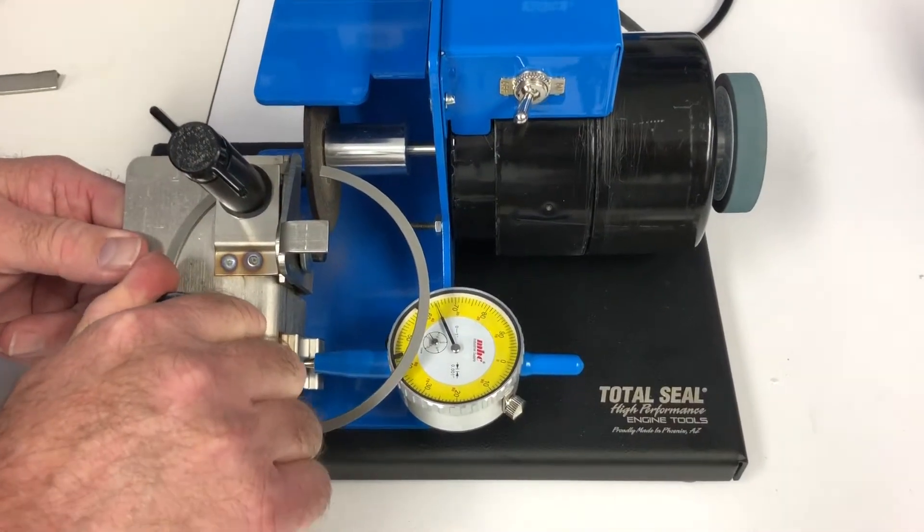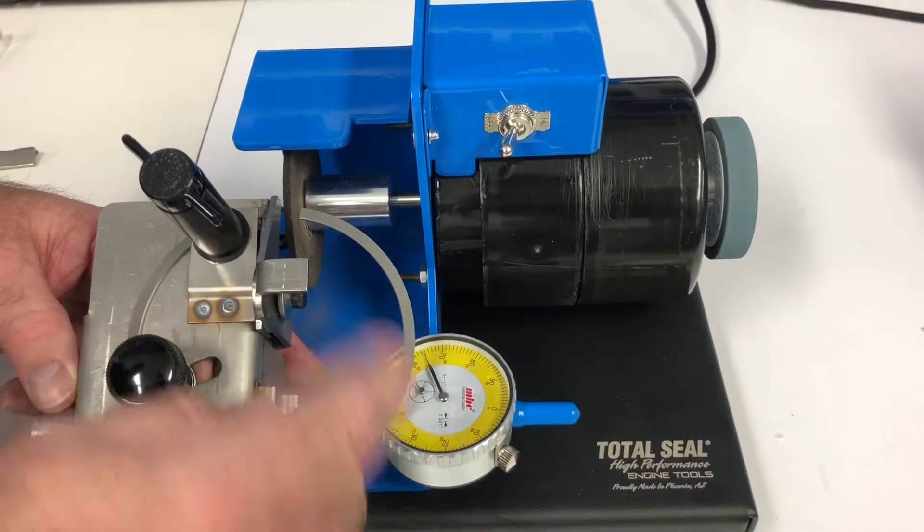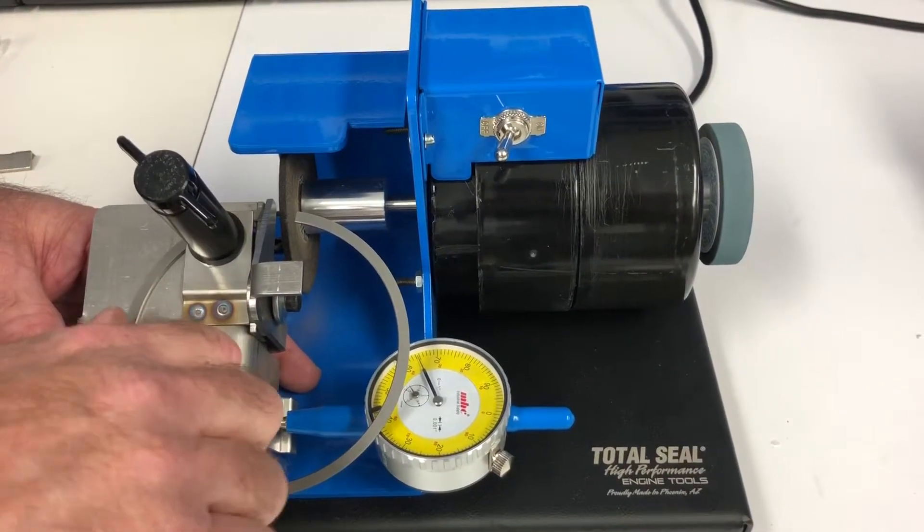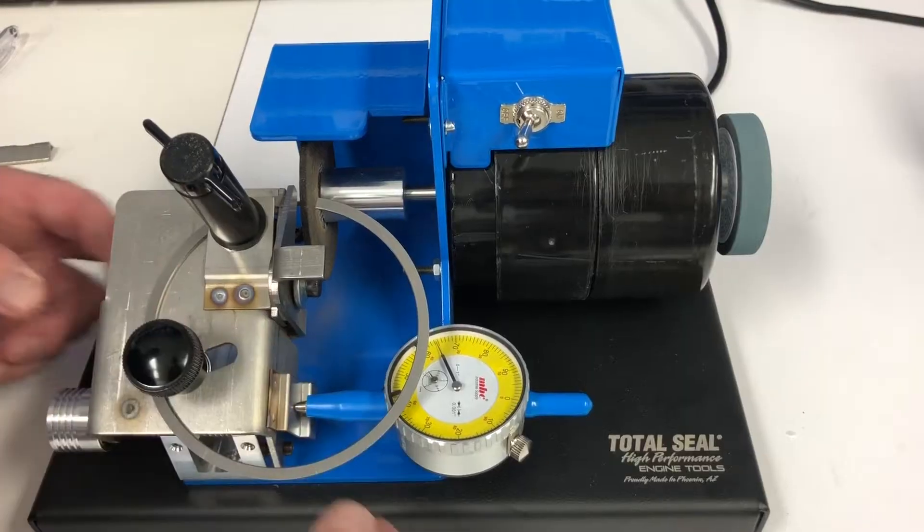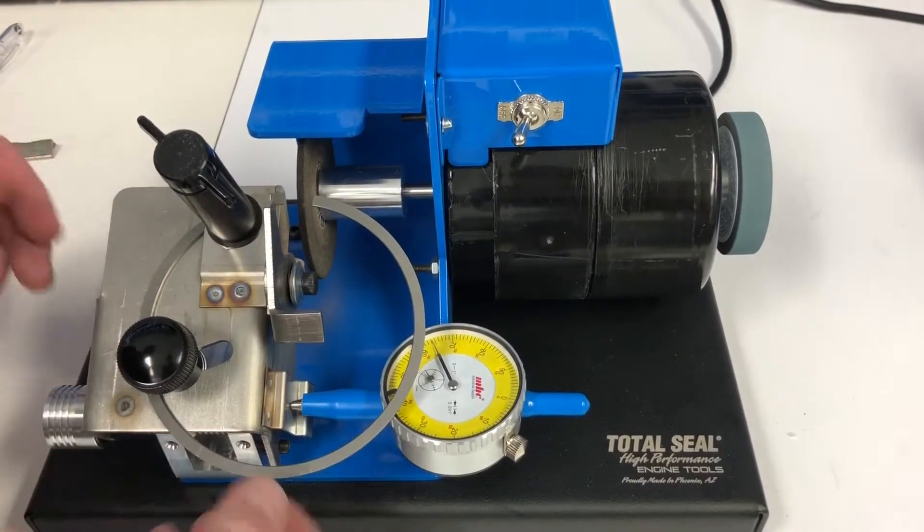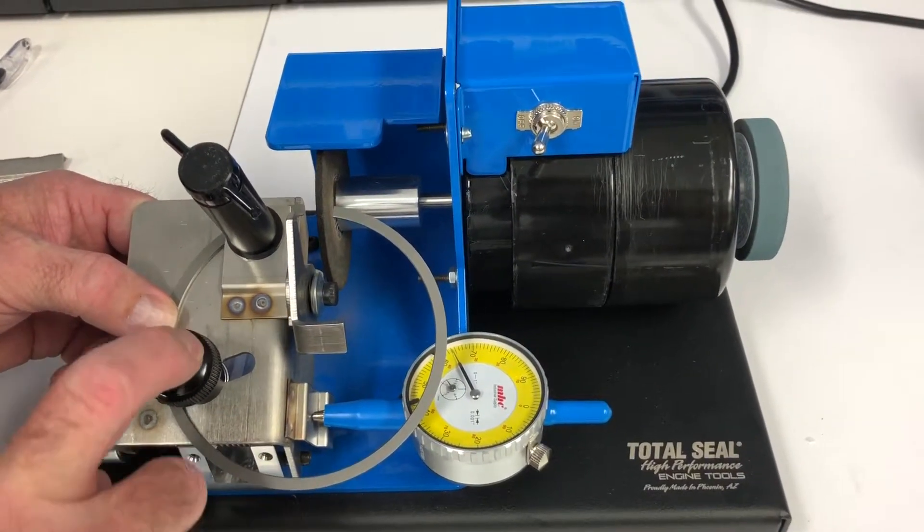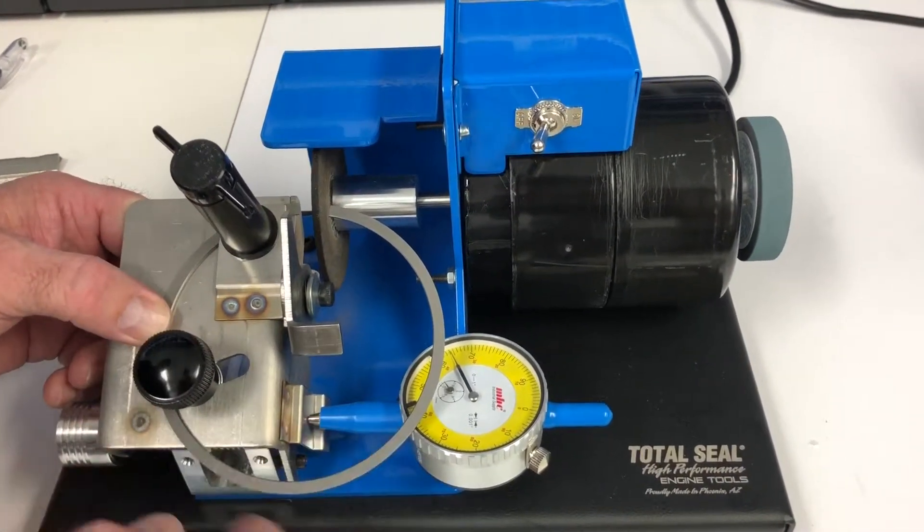You're going to set the arc which is basically your stop so you can continue filing rings so you have complete repeatability throughout this whole ring itself. All the top rings, second rings. You'll want to change it depending on the radial wall but this basically makes it so you can repeat filing the same ring over and over again.